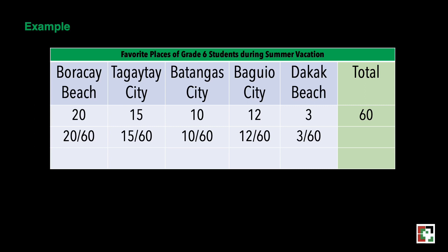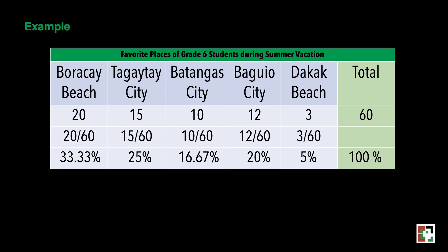Since we already have the fractions, we will multiply each by 100 to get the percentage. 20 over 60 times 100 gives 33.33%. 15 over 60 times 100 gives 25%. 10 over 60 times 100 gives 16.67%. 12 over 60 times 100 gives 20%. And 3 over 60 times 100 gives 5%. Adding all these gives 100%.